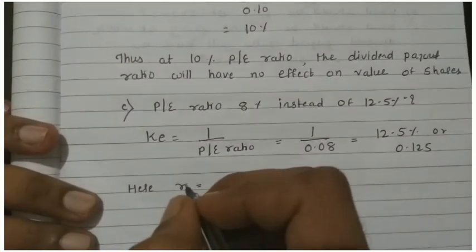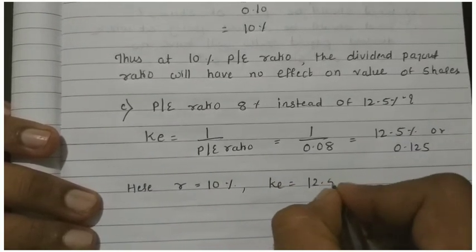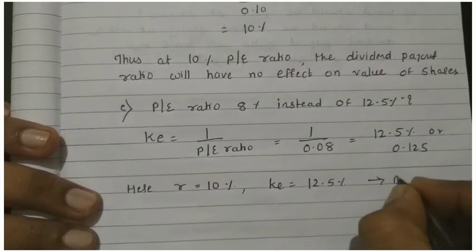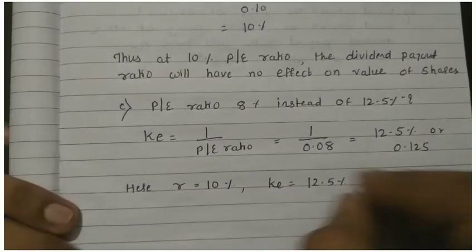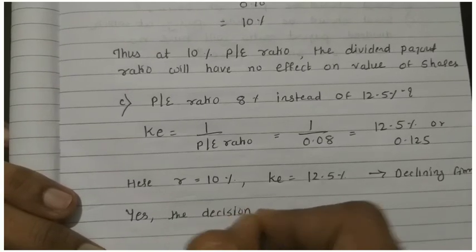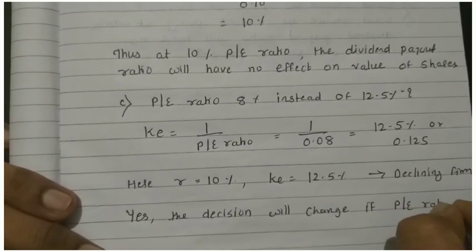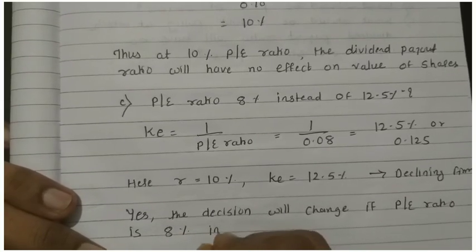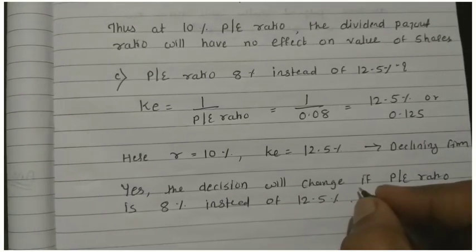Here R is, R we found out is 10%. So R is 10%, now KE became this 12.5%. So which firm? In short, what will it become? Declining firm. Earlier it was growing firm. So your conclusion will be: yes, the decision will change. Yes, the decision will change if P/E ratio is 8% instead of 12.5%.